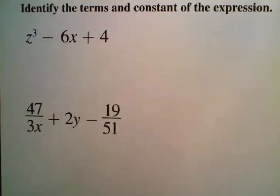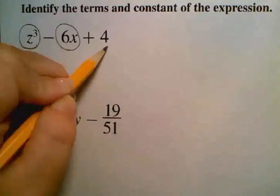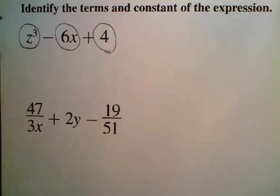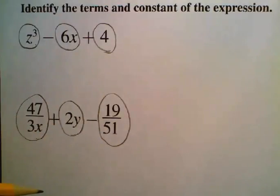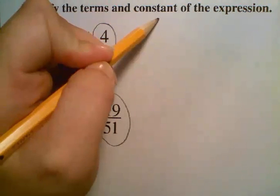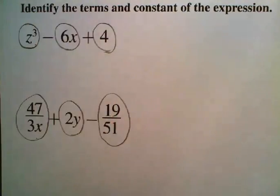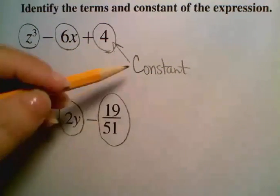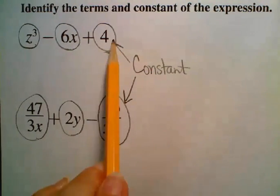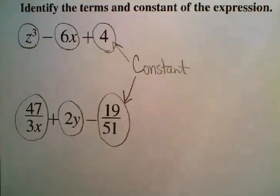Now we're asked to identify the terms and the constants of the given expression. So the terms again, those are just 1, 2, 3. You've got 3 terms. Here we've got 1, 2, 3 terms. We have 3 terms in each one of these expressions. The constant is the number without a variable. Okay, it's the number that does not have a variable or the term that doesn't have a variable attached to it. So here is our constant. And here is our constant. These two terms do not have a variable attached to them.